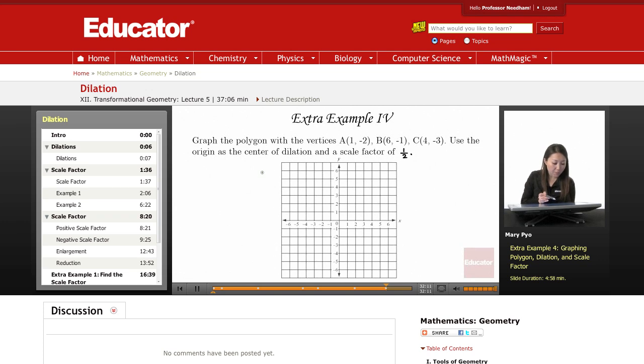The final example: graph the polygon with the vertices A, B, C. Use the origin as a center of dilation and a scale factor of 1 over 2.